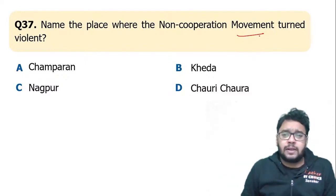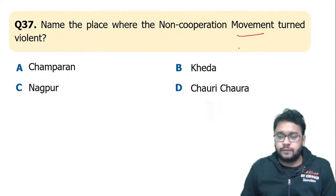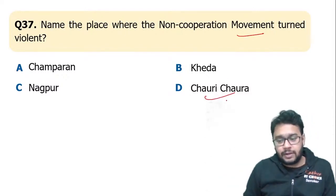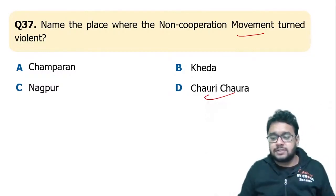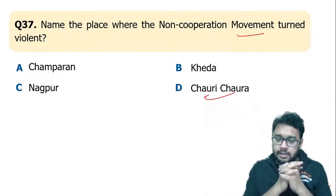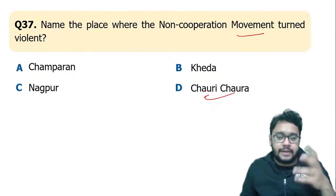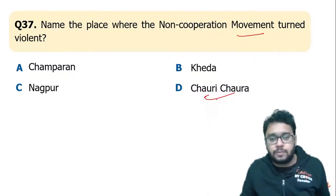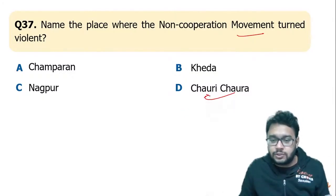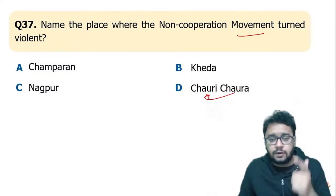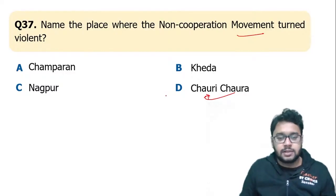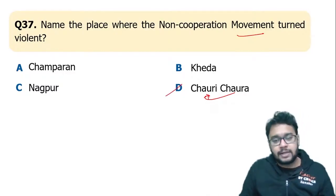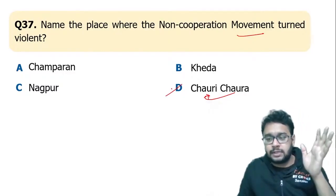Name the place where the non-cooperation movement turned violent. On 5th February 1922, in Chauri Chaura, a police station was set on fire by an angry crowd. That is why the non-cooperation movement is said to have turned violent in Chauri Chaura. Because of this, Gandhiji called off the movement on 5th March 1922.